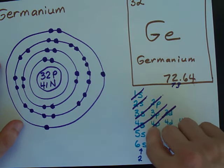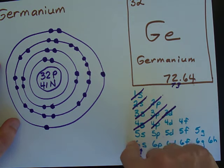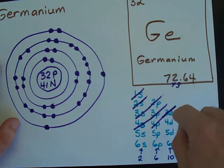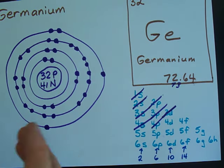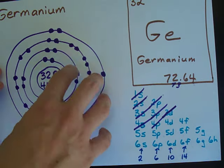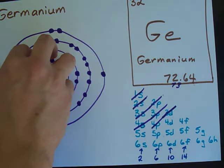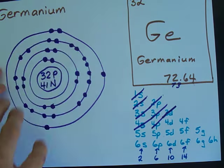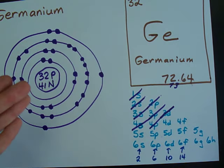Then, 6 more in the fourth, then 2 into the fifth, before you go back to your fourth shell and add some there. It gets really complicated. But, this is the way that we fill electron orbitals with atoms, from the lowest energy up. Best of luck.